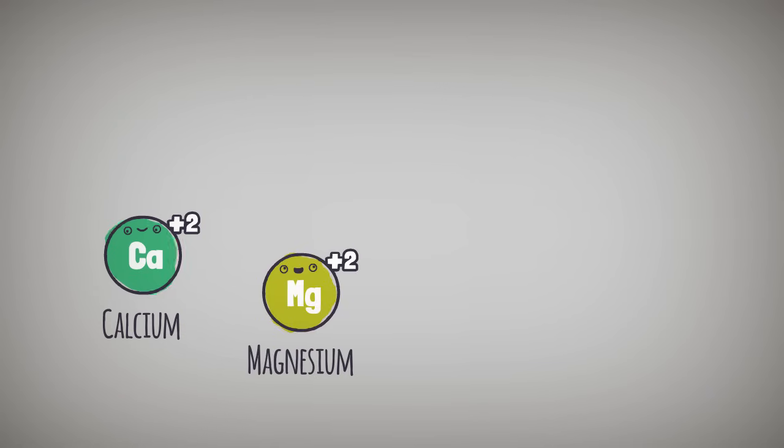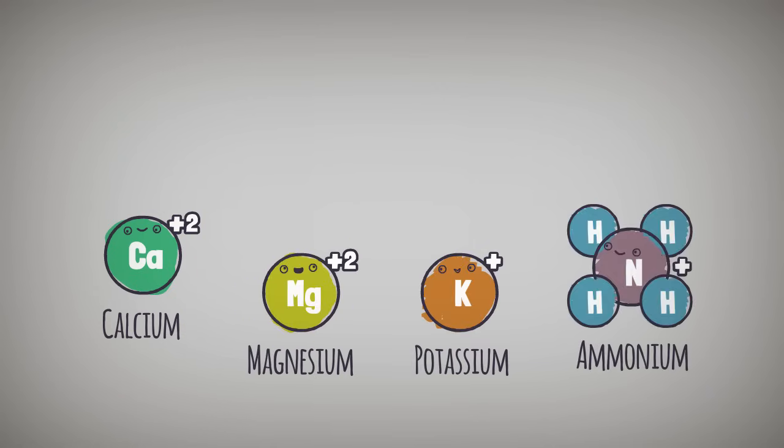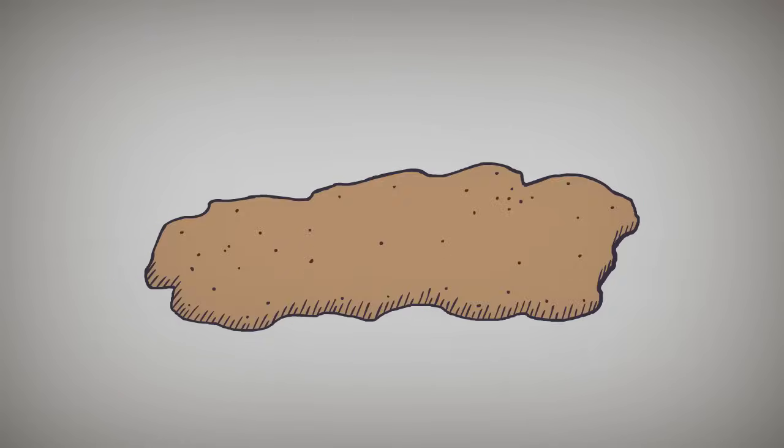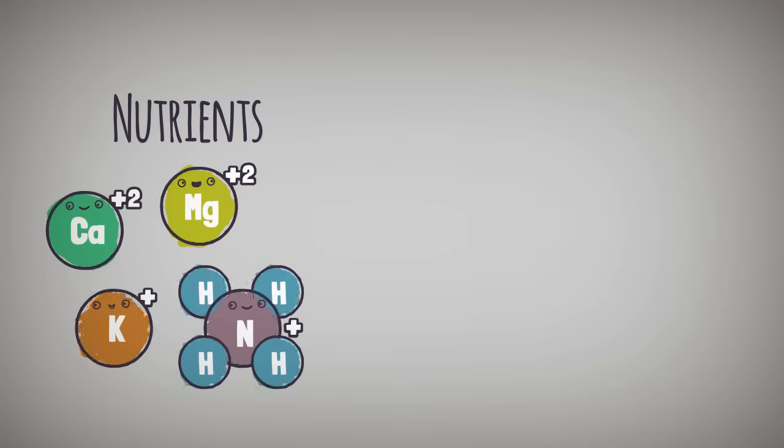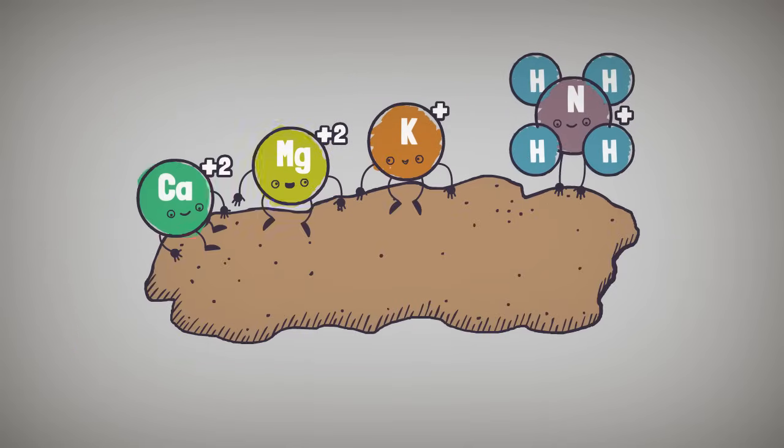Nutrients like calcium, magnesium, potassium, and ammonium are all positively charged chemicals, or cations. And as it turns out, most clay particles and organic matter in soil are negatively charged. So, many nutrients are positive and particles are negative. Perfect! In chemistry, as in romance, opposites attract.